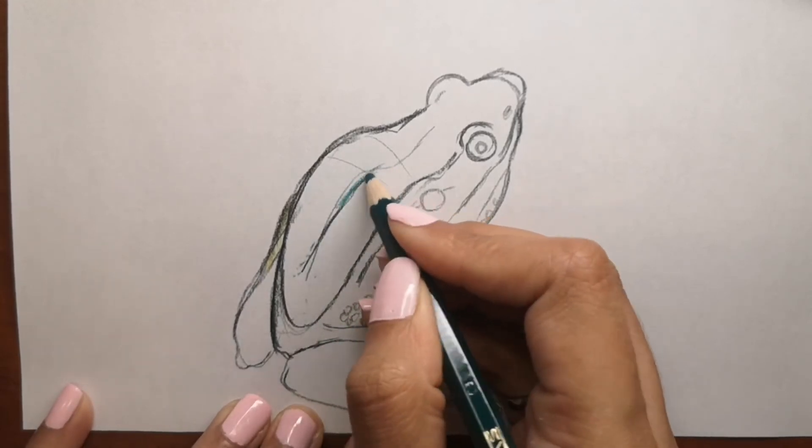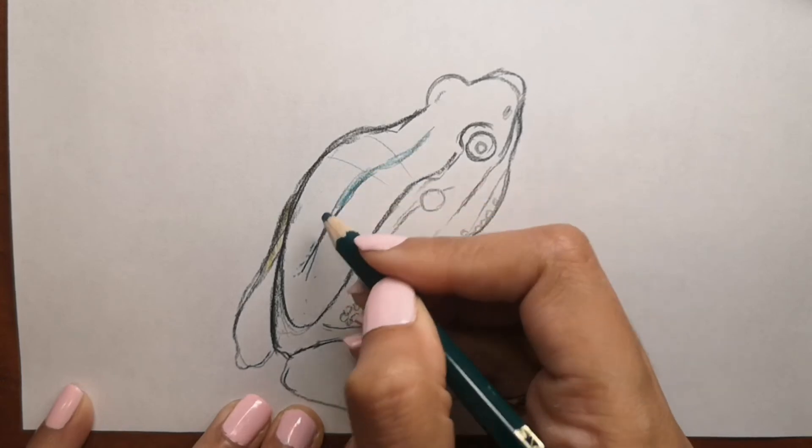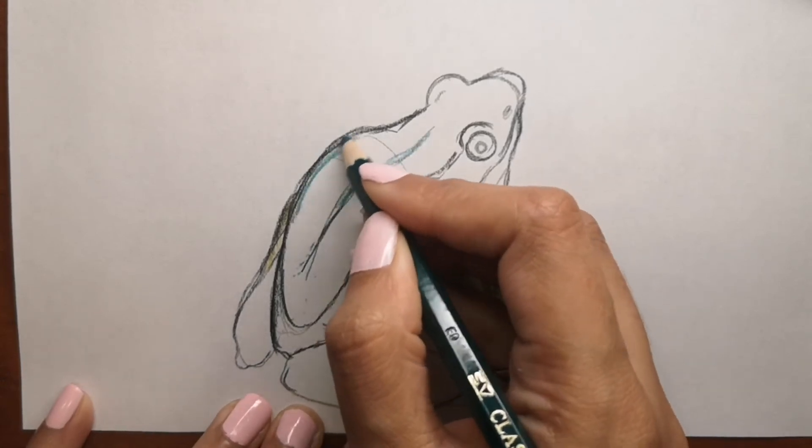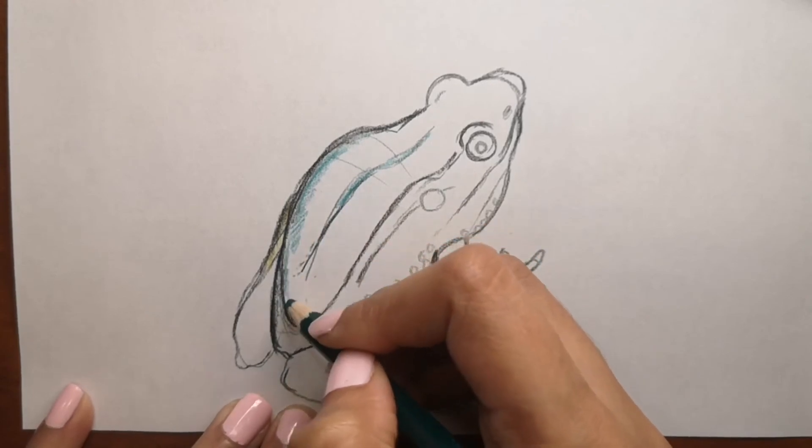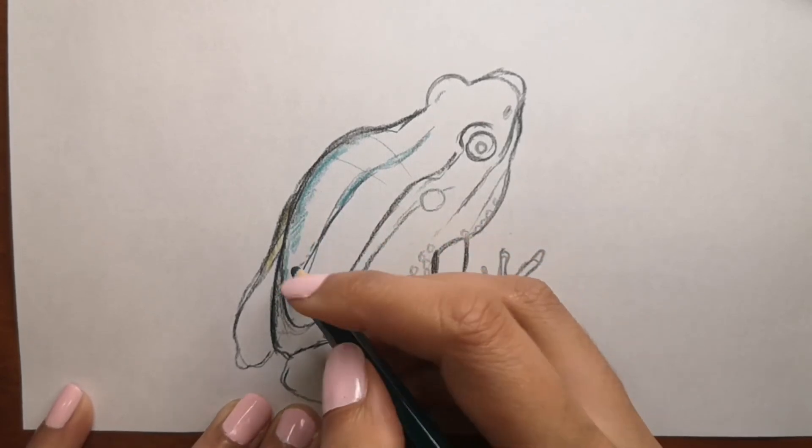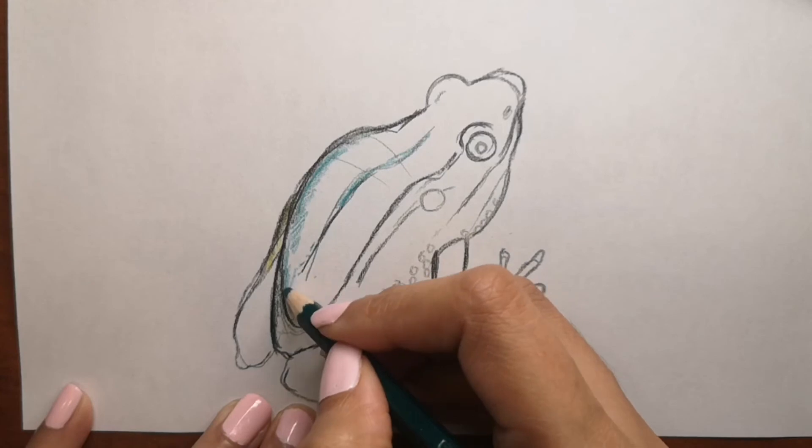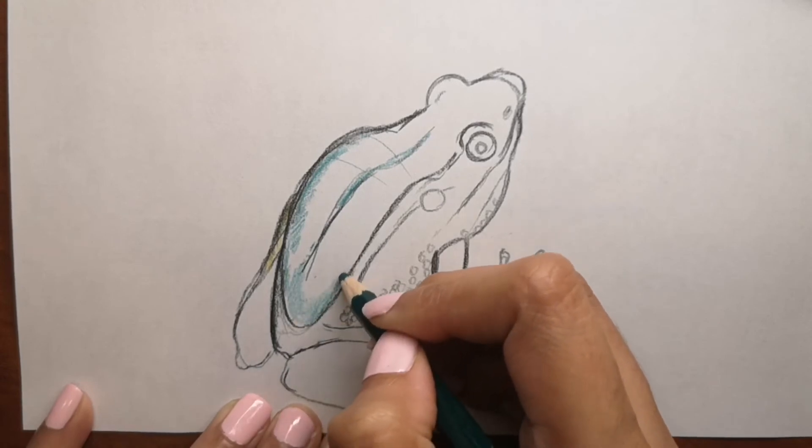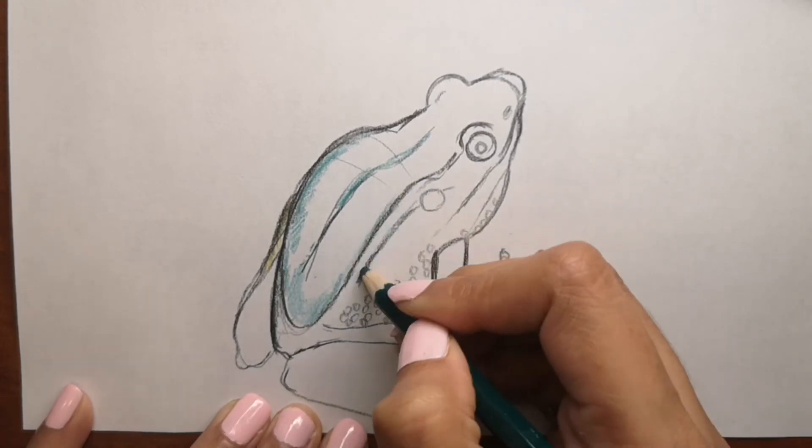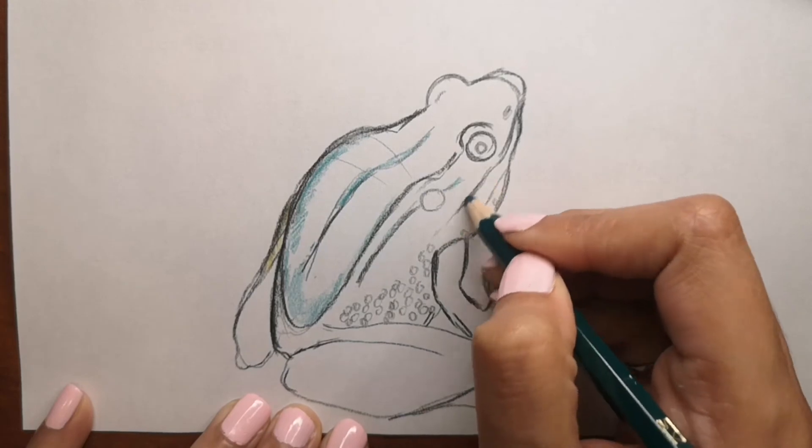Croaking is used by male frogs as a way to attract females. Apparently, each frog species has a distinct croak.